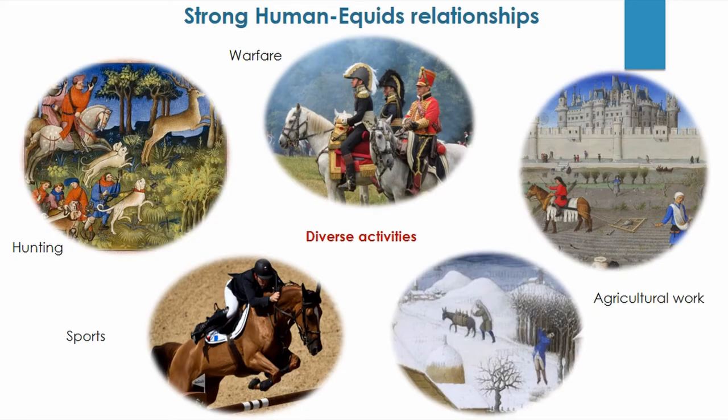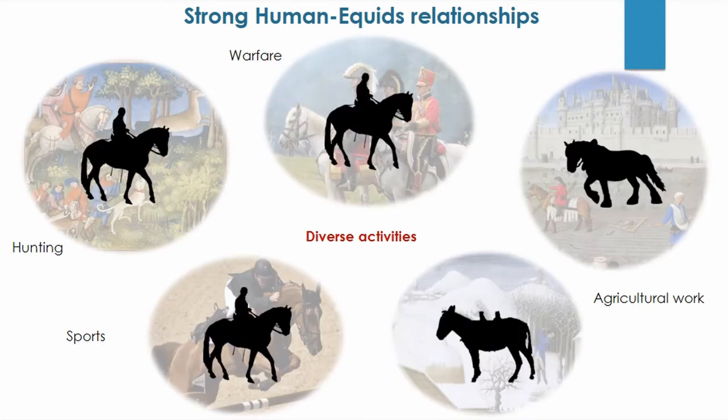Since the beginning of their interaction with humans, equids were closely related to human societies and their various activities. They were exploited for economical and political development as means of transport, involved in warfare, or for agricultural works. Moreover, they were used for hunting and sports and most recently as companions and pets. Consequently, a diversity of functions were attributed to them as mounts, draft, or pack animals.